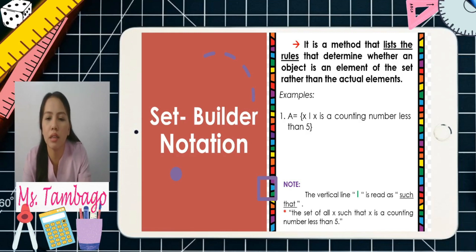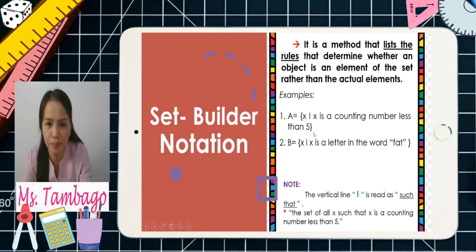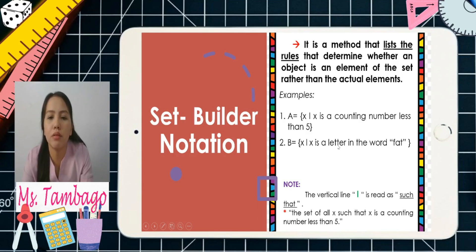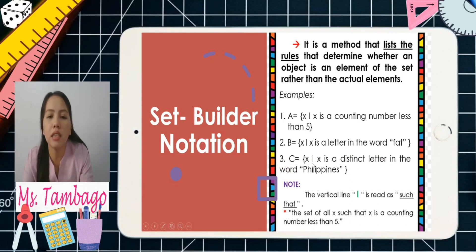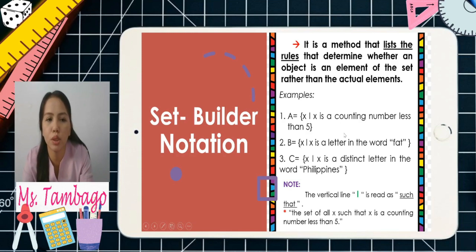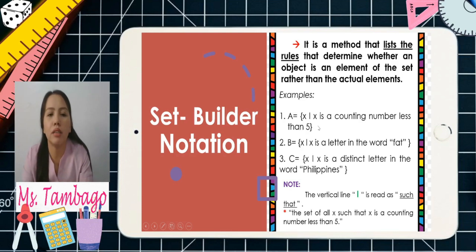In simplest form: x such that x is a counting number less than five. Number two: Set B equals {x | x is a letter in the word 'fat'}, read as the set of all x such that x is a letter in the word fat. Number three: Set C equals {x | x is a distinct letter in the word Philippines}. Those are the three ways of writing a set.